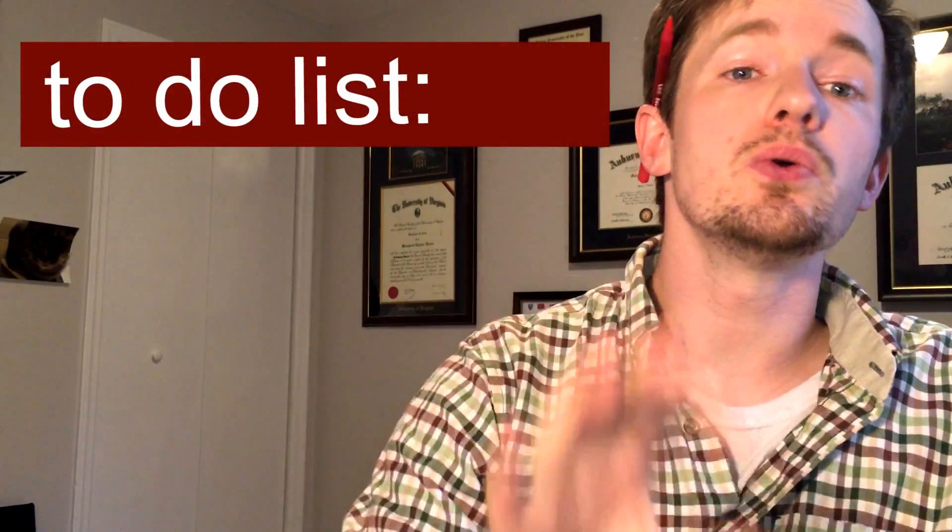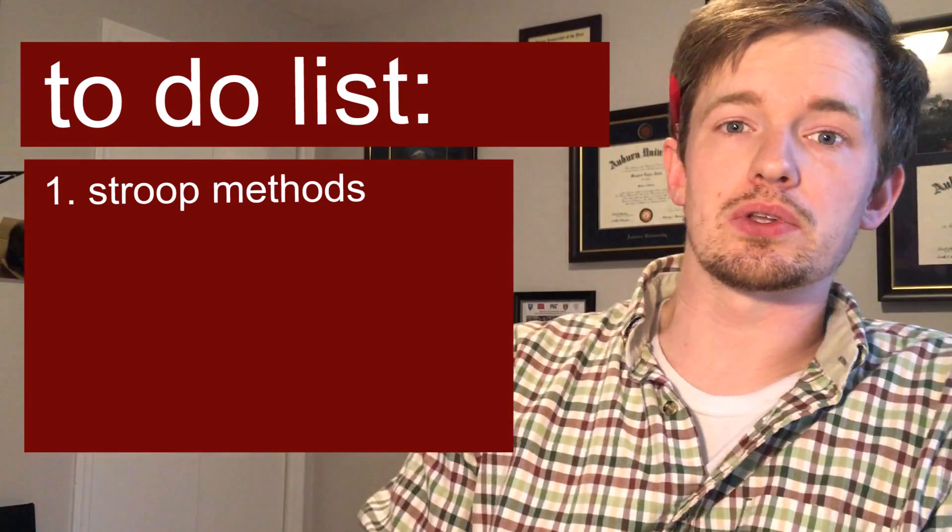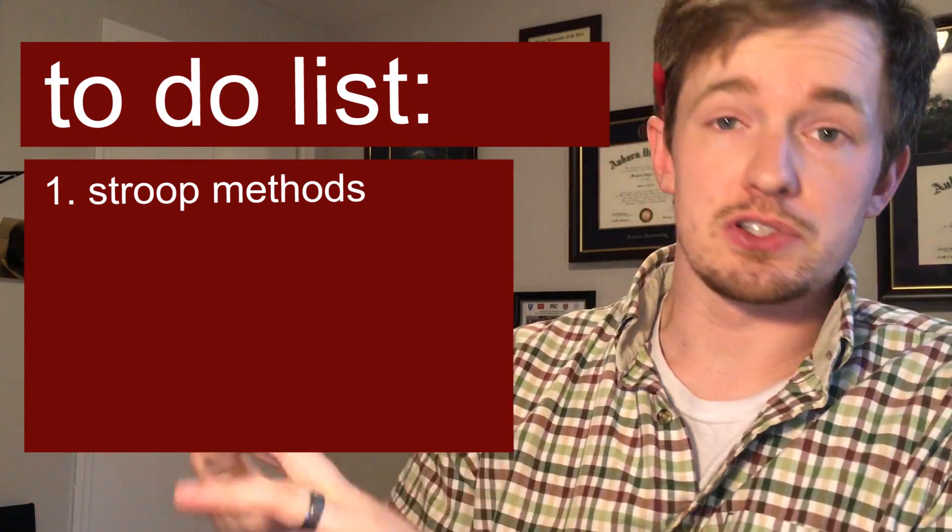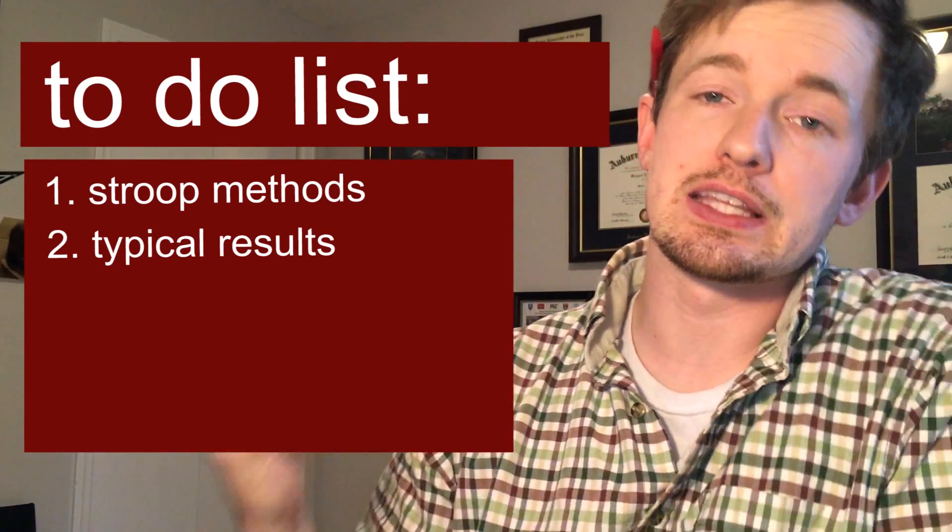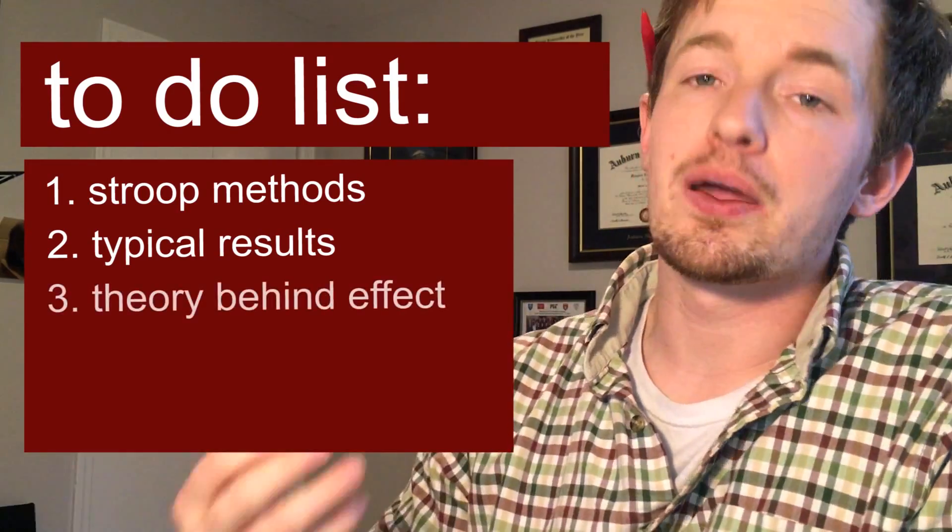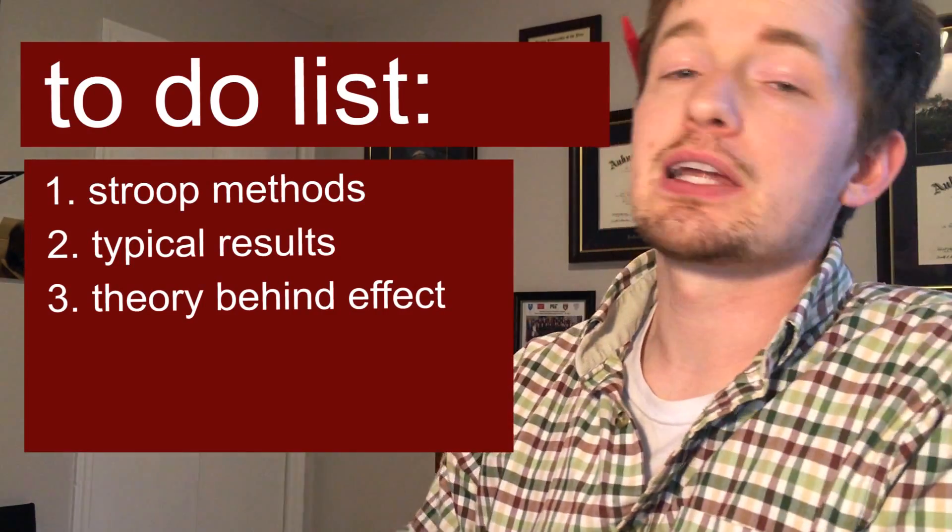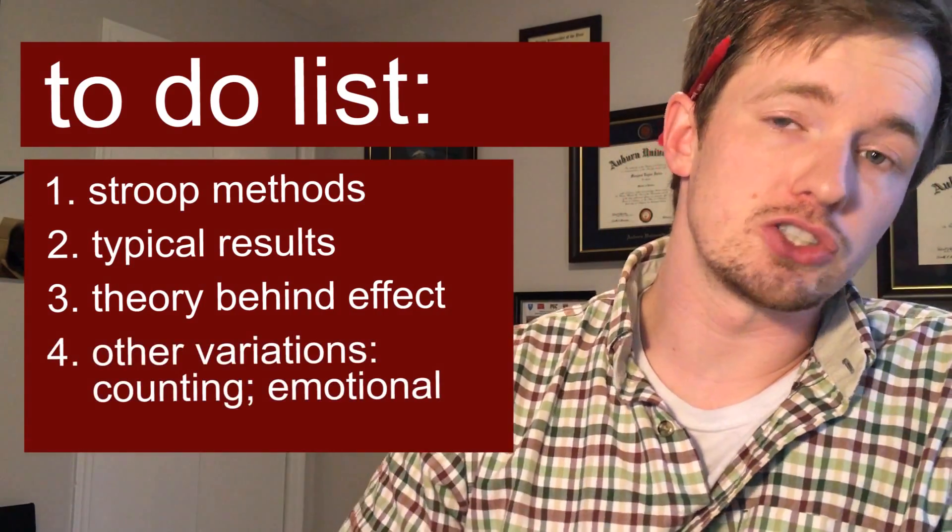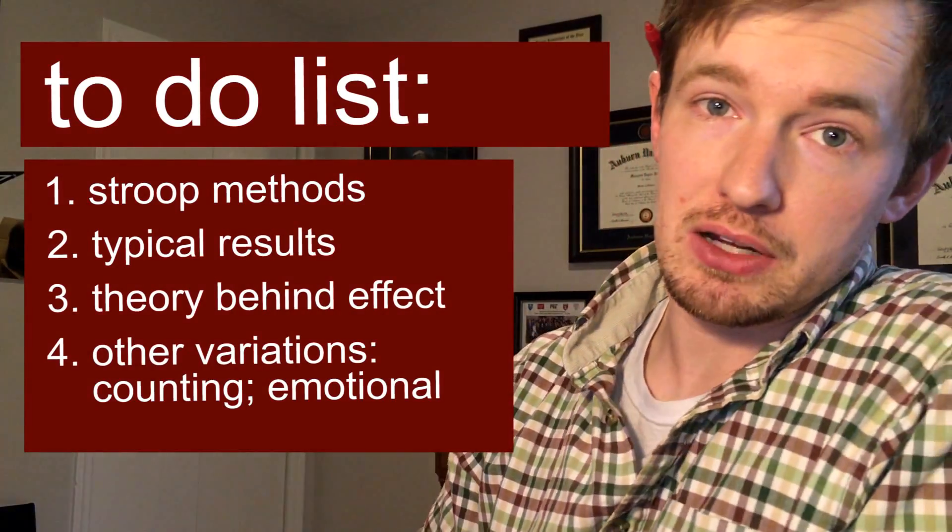What I want to do in this video is basically show you what the Stroop Effect looks like, so that if you were to take this task you would know what it would look like. Then we're going to go through the results, what you would typically expect. Then I'm going to talk about the theory behind those results, why we see those things when we're looking at these data. And then I'm going to give you a couple of other variations of the Stroop Effect, because it's not just colors and words. It can be broken out into different kinds.